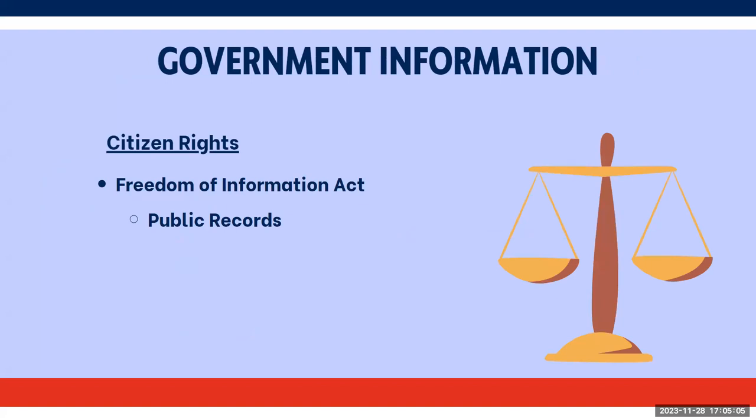Government information is freely available to us as citizens. It's our citizen right under the Freedom of Information Act, which provides the right to request access to records from any federal agency. It is often described as the law that keeps citizens in the know about their government. Federal agencies are required to disclose any information requested under the FOIA, unless it falls under one of the nine exemptions, which usually has to do with national security.